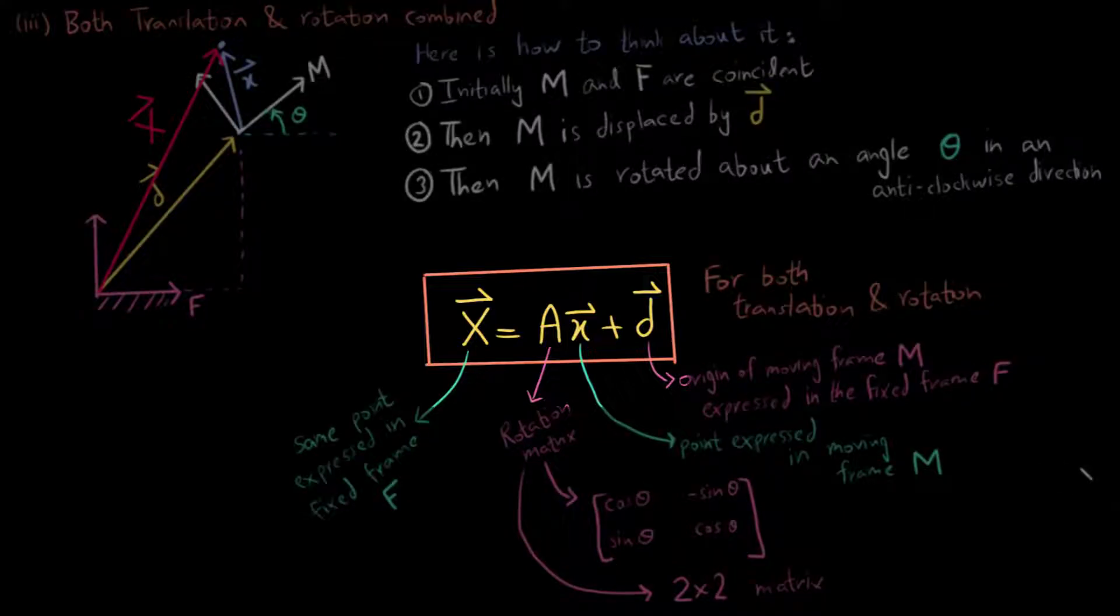You should see this as the moving frame first being displaced by a vector d and then it is rotated by an angle theta in the anticlockwise direction which is represented by the rotation matrix A.